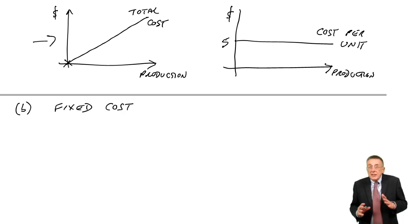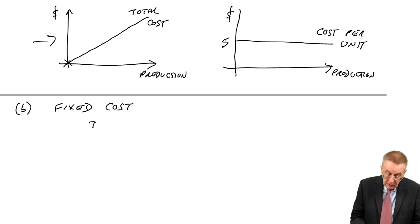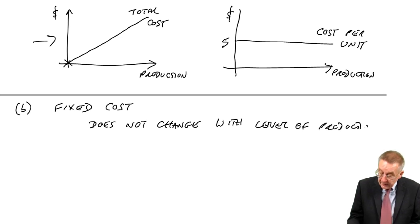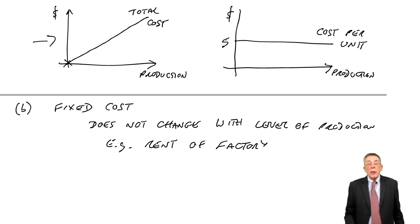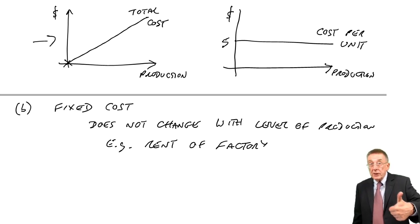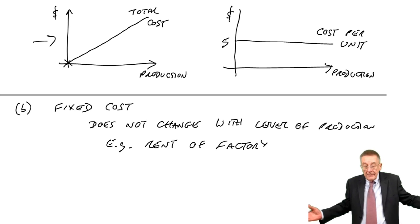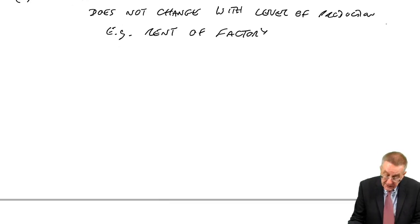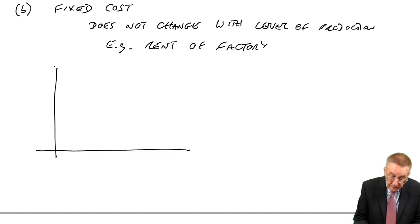A fixed cost doesn't vary with the level of production, it does not change with the level of production. An example of that is the rent of the factory. It's a production cost, but if our factory costs $10,000 a year to rent, we'll be paying out $10,000 whether I produce one unit or I produce 1,000 units. So, a fixed cost.